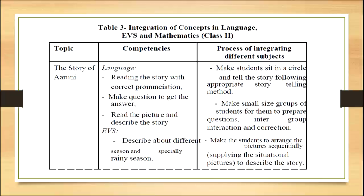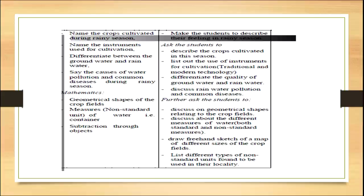The competencies in the language subject are: reading the story with correct pronunciation, making questions to get answers, and reading the picture to describe the story. For integration, students can sit in a circle, tell the story following the appropriate storytelling method, and form small groups to prepare questions with intergroup interaction and correction. In the EVS subject, competencies include describing different seasons especially the rainy season, naming the crops cultivated during the rainy season, naming the instruments used for cultivation, differentiating between ground water and rain water, and stating causes of water pollution and common diseases during the rainy season.